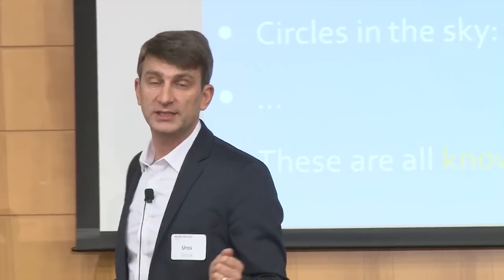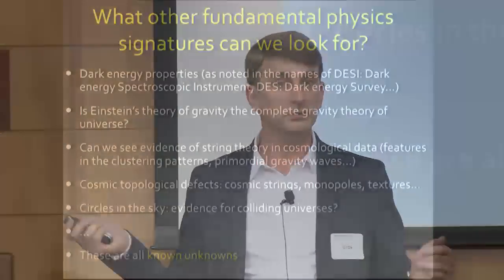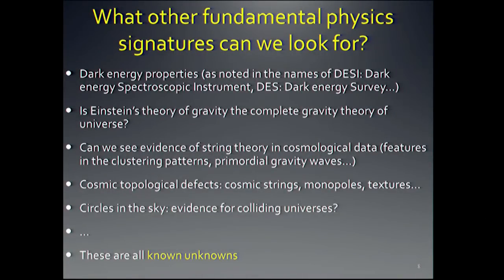What other things can we look for? There are so many. Dark energy properties is one thing that several of these experiments have been built for — measuring its properties is a noble goal. We can also ask whether Einstein's theory of gravity needs corrections at cosmological scales, or look for evidence of string theory or quantum gravity in features in the data. We could look for topological defects — cosmic strings, monopoles, or textures — or circles in the sky as evidence for colliding universes. The list goes on and on.